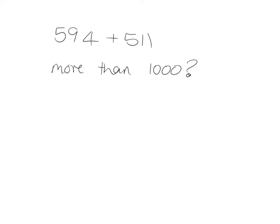Well, you should easily be able to see this without doing the actual sum. This is more than 500 and this is more than 500, and if you added 500 and 500 you'd get a thousand. So obviously if you add something a bit more than 500 and another thing that's a bit more than 500, yes, this is going to be more than a thousand.